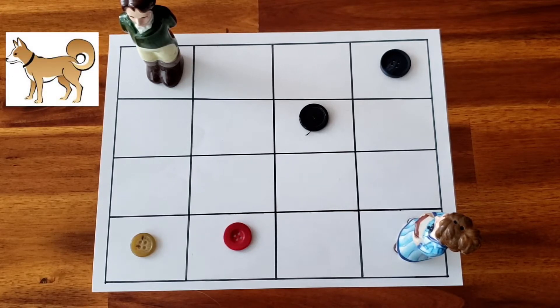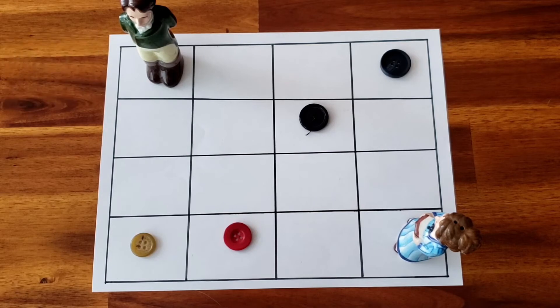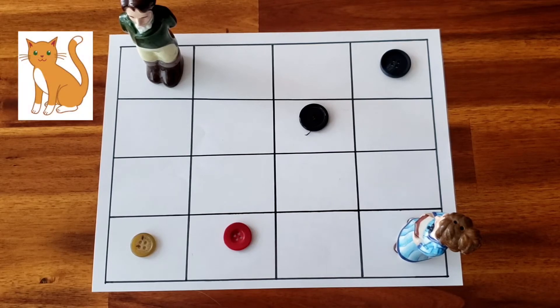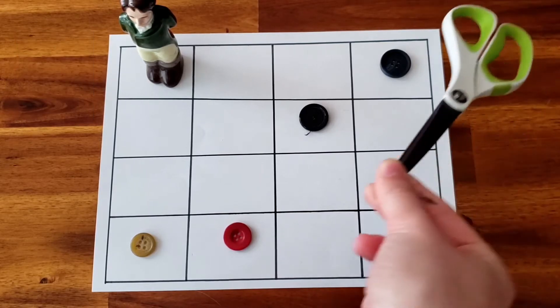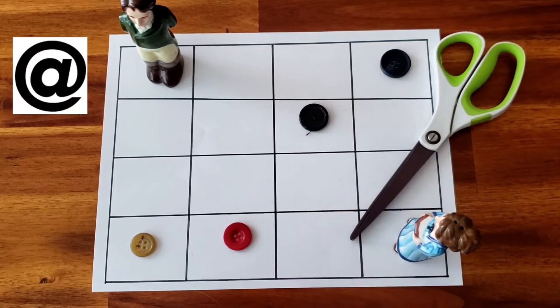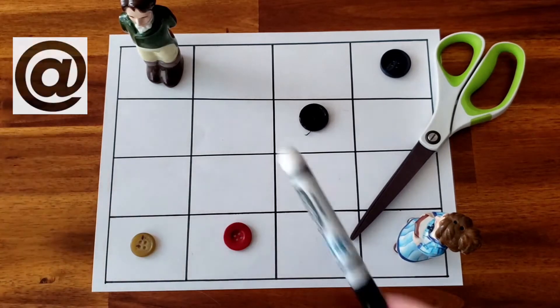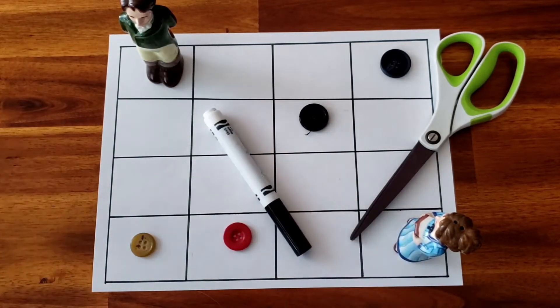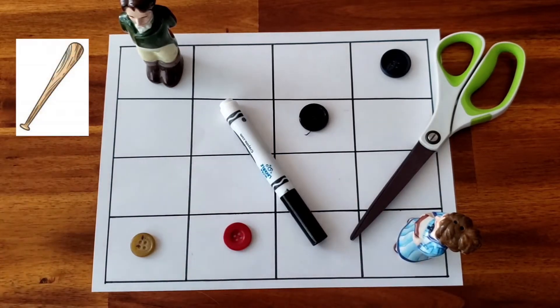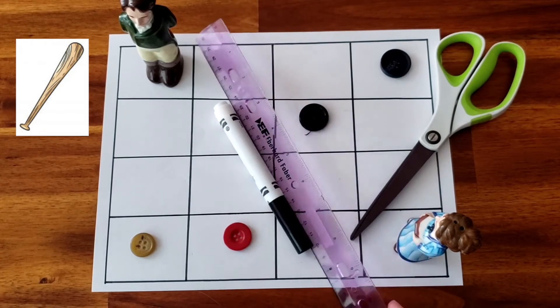Before you get started make sure you have all your materials. You will need paper, some small objects - Legos work really well for this game. I'm using buttons and salt and pepper shakers. You also need a pair of scissors, a writing utensil like a marker, and a ruler.